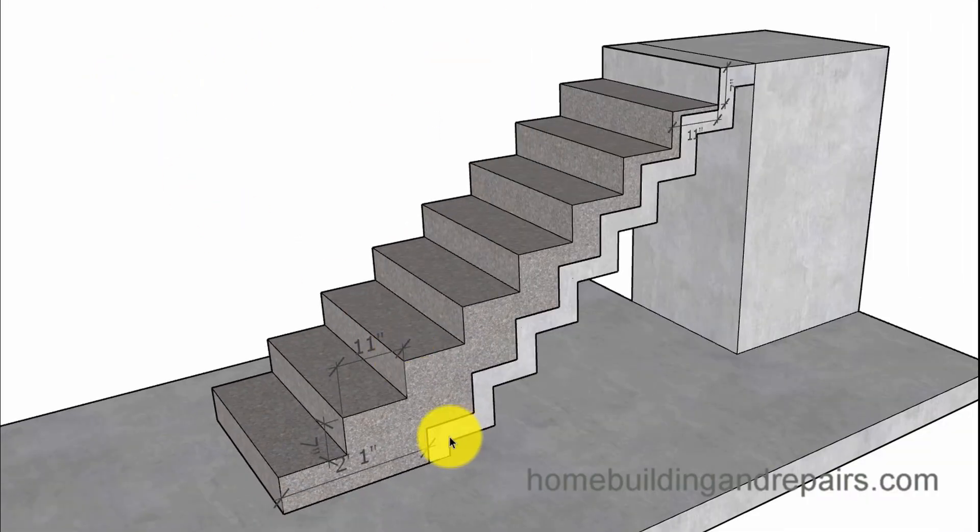We can count the steps here: one, two, three, four, five, six, seven steps on this existing stairway. One, two, three, four, five, six, seven, eight - we just added a step and made them 11 inches instead of nine inches, and then we changed the rise on it also.